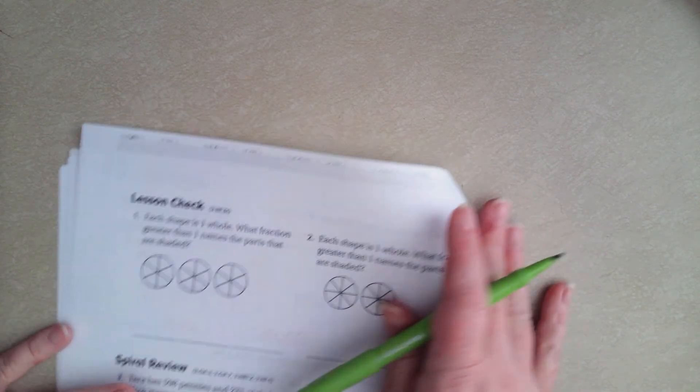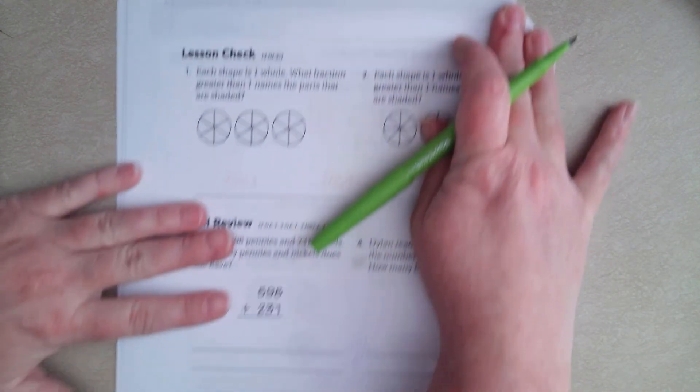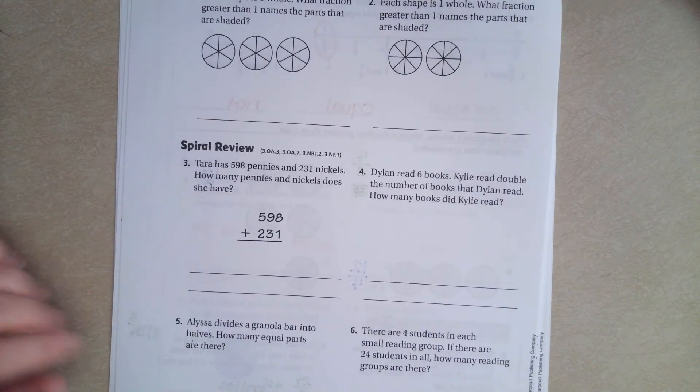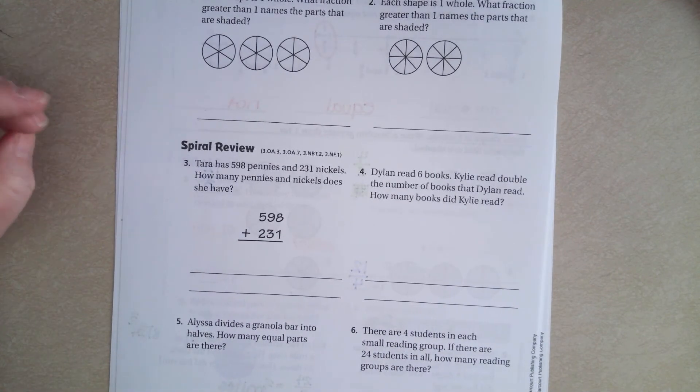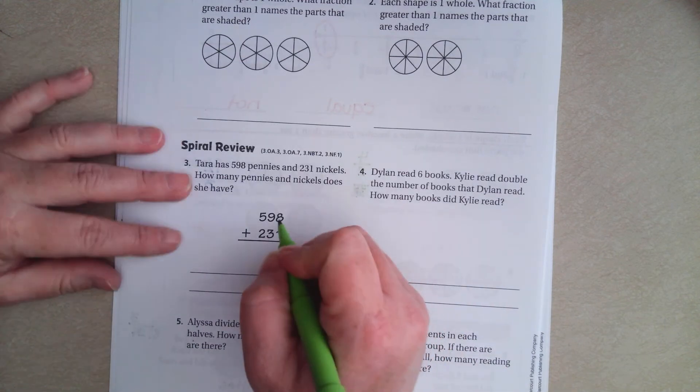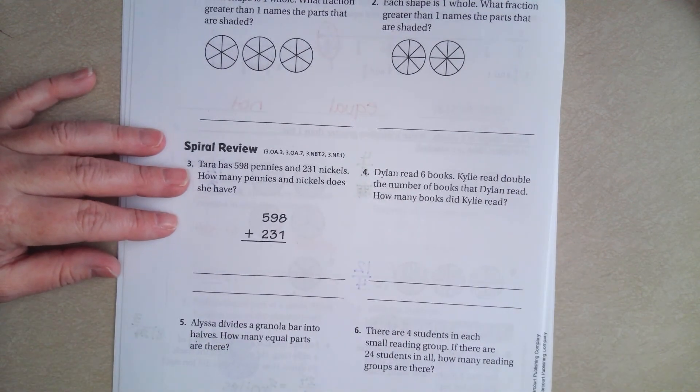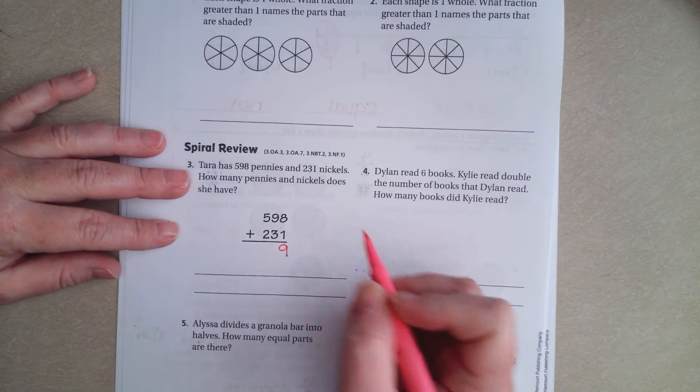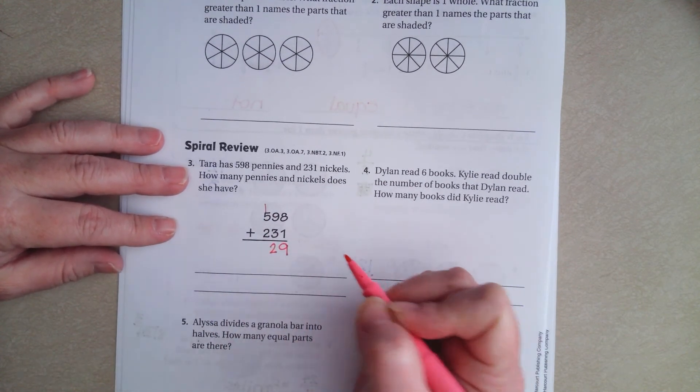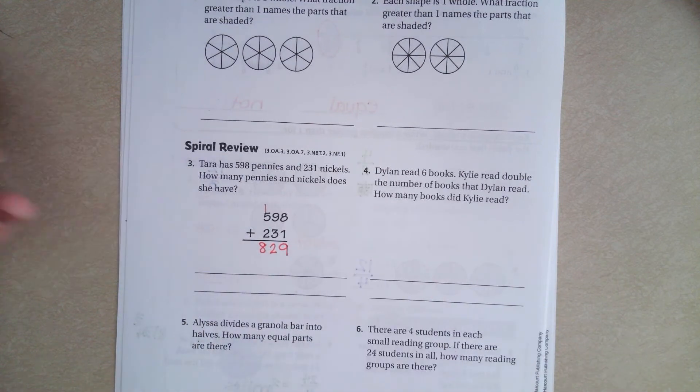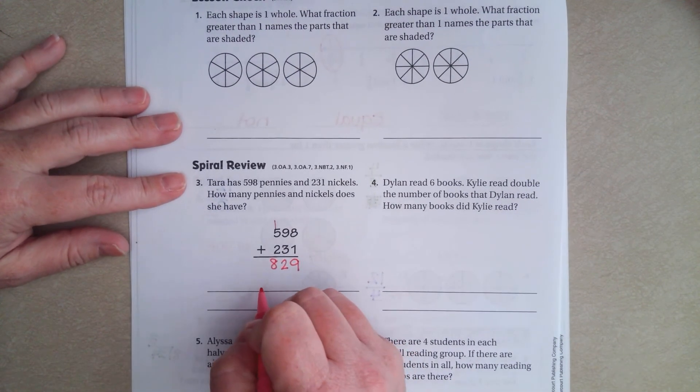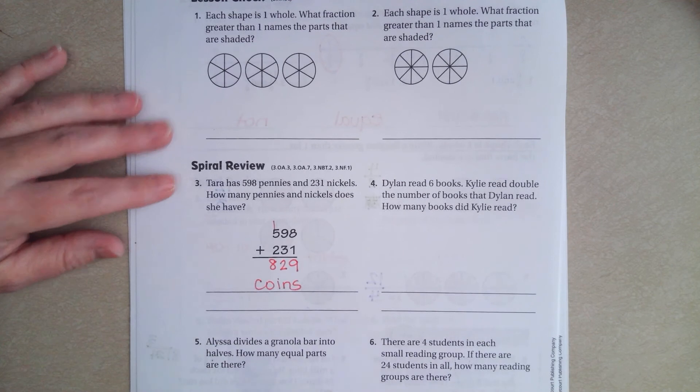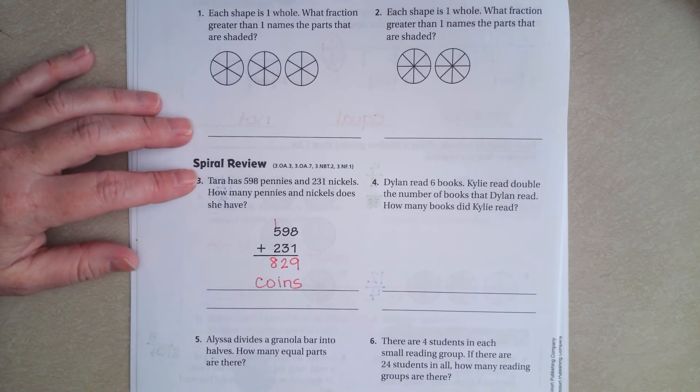Let's go over onto the back where you guys are going to try the lesson check, just like always. And we're going to go down and do a spiral review. It says, Tara has 598 pennies and 231 nickels. How many pennies and nickels does she have? So it's just how many coins, not how much they're worth. So 8 plus 1 is 9. 9 plus 3 is 12. Carry that 1. 1 plus 5 is 6. Plus 2 more is 8. 829 coins. I don't want to write out pennies and nickels, so we're going to say coins.